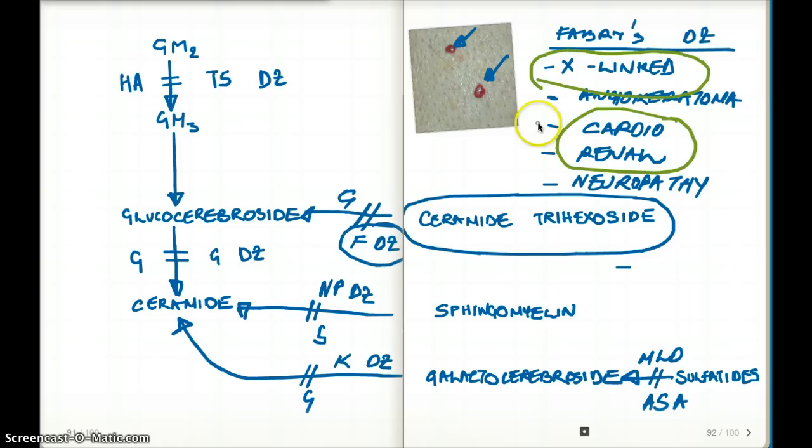Another unique feature of Fabry's disease is that it's X-linked. One other disease is also X-linked: Hunter syndrome, which is a mucopolysaccharidosis disease.